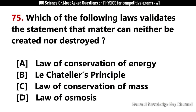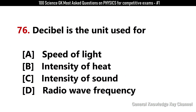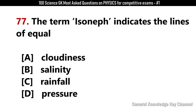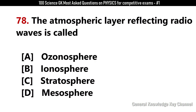Which of the following laws validates the statement that matter can neither be created nor destroyed? Answer C: Law of conservation of mass. Decibel is the unit used for? Answer C: Intensity of sound. The term isoneph indicates the lines of equal? Answer A: Cloudiness. The atmospheric layer reflecting radio waves is called? Answer B: Ionosphere.